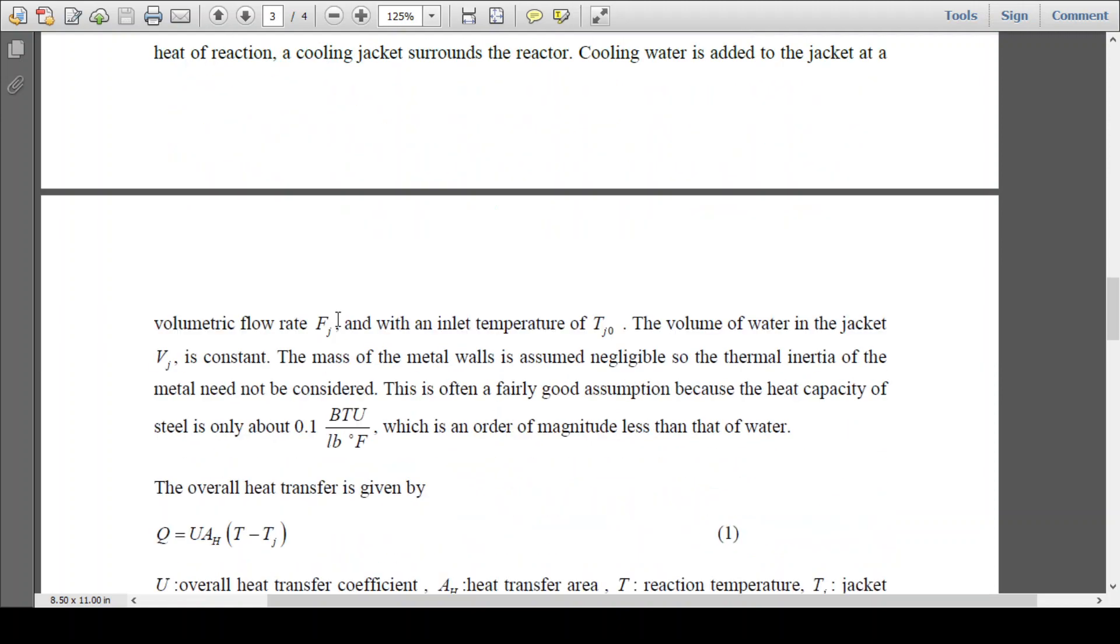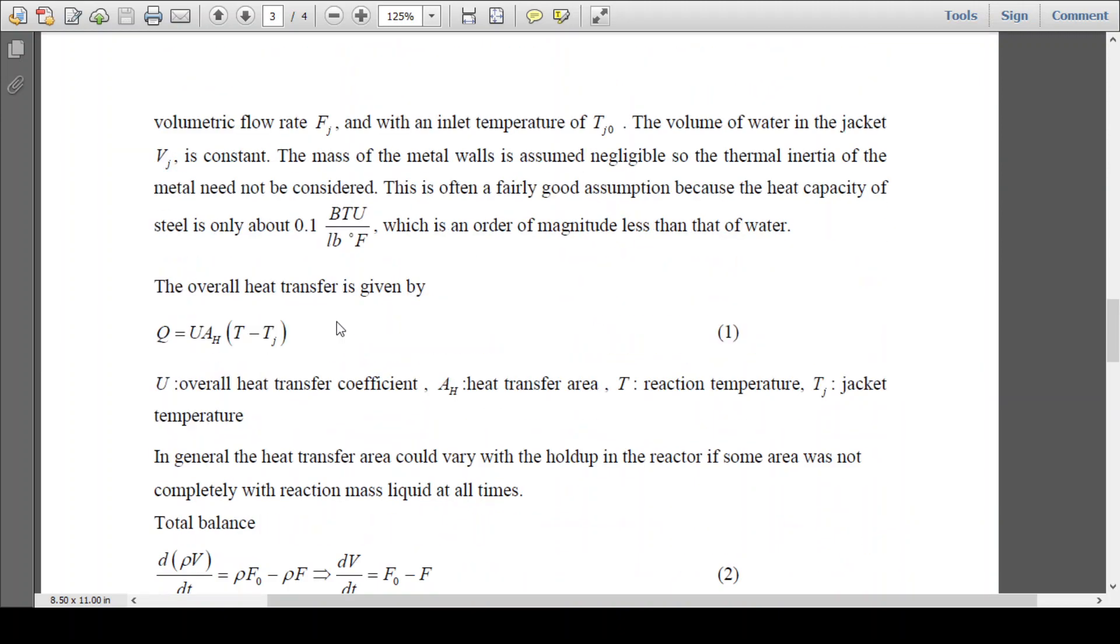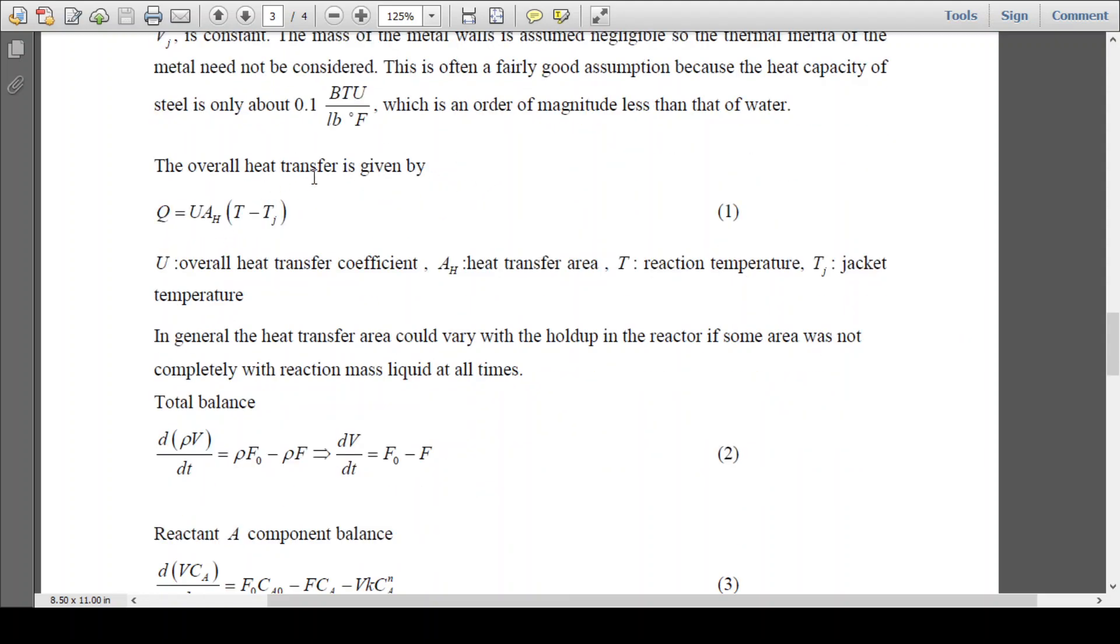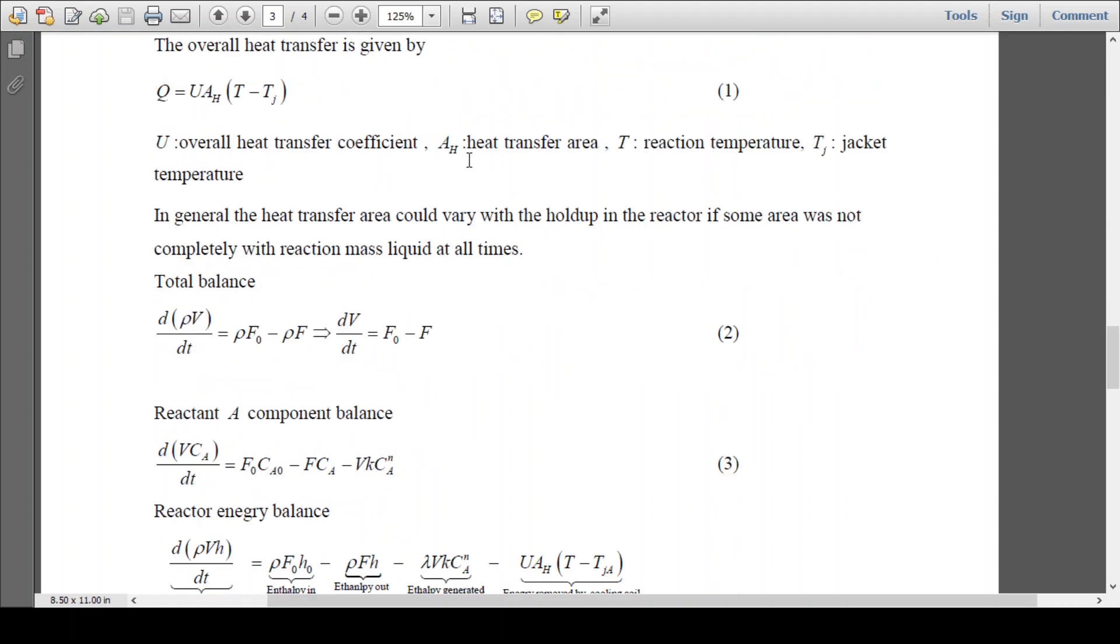The average temperature needs to be considered here. Metal wall is considered to be thin so that thermal inertia is not being considered. So whatever temperature inside the reactor, same temperature of metal wall is being considered. The overall heat transfer rate is given by Q = UAh(T - Tj), where U is overall heat transfer coefficient, Ah is heat transfer area, T is reaction temperature, Tj is jacket temperature.